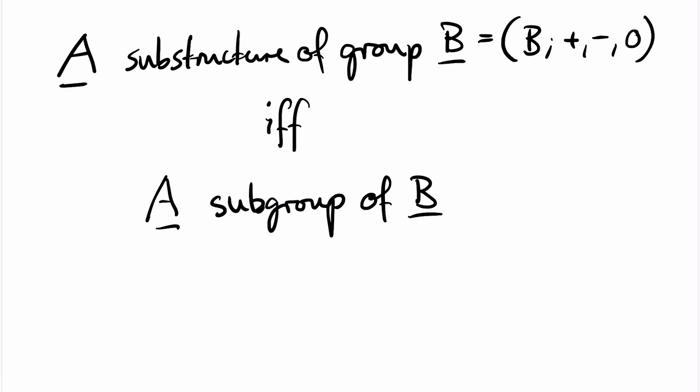And every substructure of B must be closed under composition. Moreover, a substructure of a group also satisfies the three identities for groups that we specified earlier, since we only have to verify them on a smaller domain. So, a substructure of a group is indeed a subgroup.